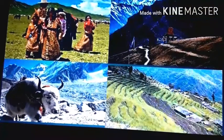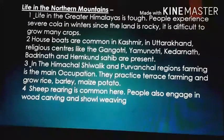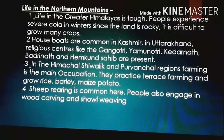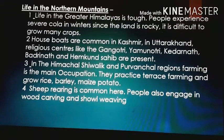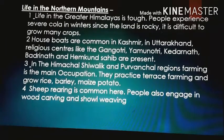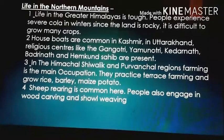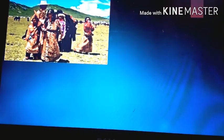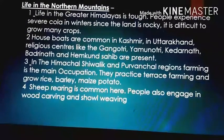In the Himachal, Shivalik, and Purvanchal regions, farming is the main occupation. People practice terrace farming and grow rice, barley, maize, and potato. Sheep rearing is common, and people also engage in wood carving and shawl weaving. Darjeeling in West Bengal is a famous hill station located to the south of Sikkim, famous for its tea gardens and high-quality tea. The government has protected and reserved forest areas in the Himalayas to safeguard forests and animal life.